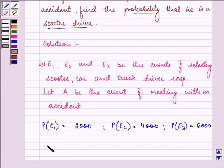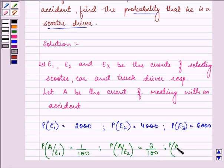Further, the probability that a scooter driver meets with an accident is 0.01, that is 1 upon 100. Probability of A upon E2 is equal to 3 upon 100, and probability of A upon E3 is 15 upon 100.